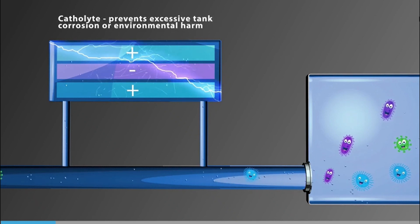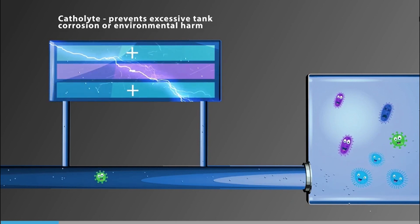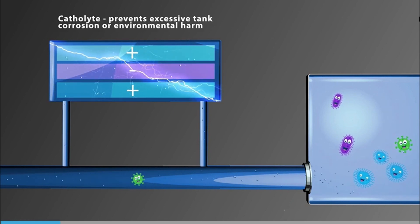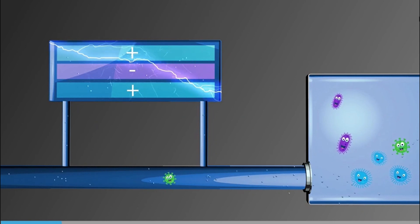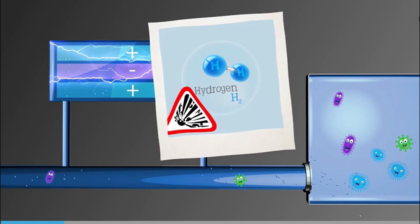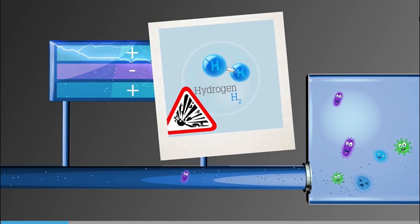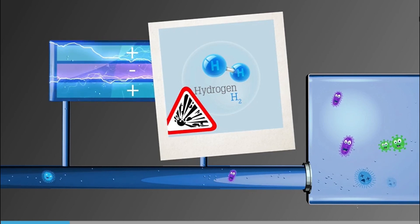The catholyte can be used to neutralize the pH change later, preventing excessive tank corrosion or environmental harm. Besides anolyte and catholyte, electrolysis can produce hydrogen gas which must be handled on board the ship. The amount of active substance generated is dependent on the salinity level of the water.